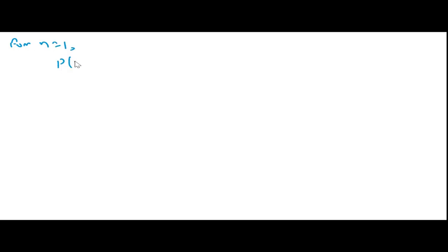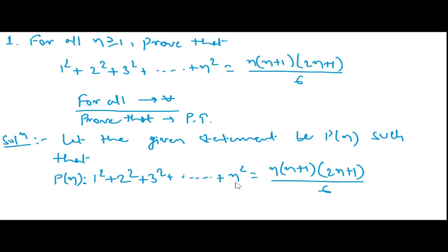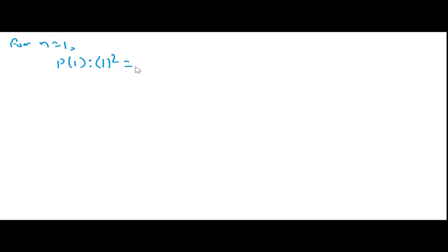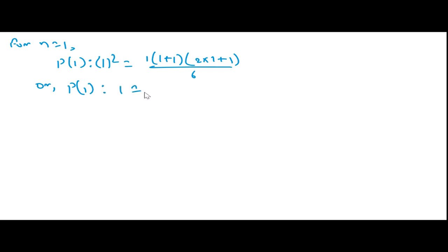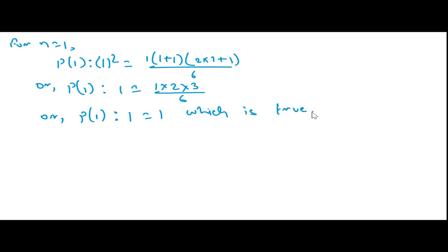Now, the principle of mathematical induction says: first check for n = 1. So P(1): put n = 1. Left hand side gives 1² = 1. Right hand side gives 1×(1+1)×(2×1+1)/6 = 1×2×3/6 = 6/6 = 1. So 1 = 1, which is true.